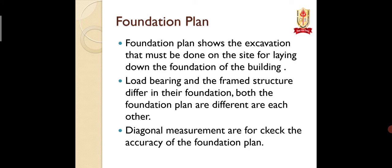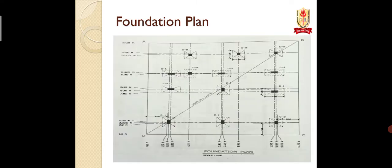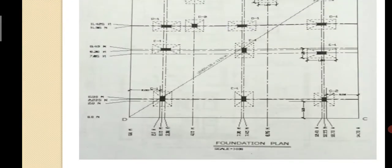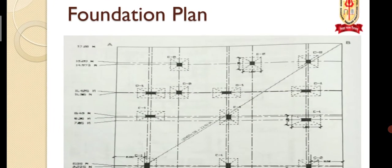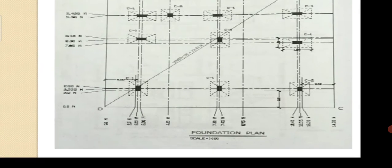The foundation plan shows the excavation that must be done on the site for laying down the foundation of the building. Load bearing and frame structure differ in the foundation — both foundation plans are different from each other. Diagonal measurements are checked for the accuracy of the foundation plan. This is a foundation plan of a frame structure, different from a load bearing structure. Here we have to show only the footing, and each footing is given a number like C1, C2, C3, C4, C5, C6.